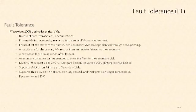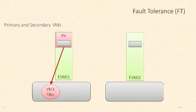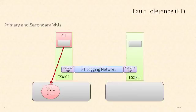Let's take a look at how fault tolerance works. On the left-hand side we have our primary virtual machine — the one we want to protect — and its files are located on a data store. Step one to enabling fault tolerance is to create a fault tolerance logging network using VMkernel ports. This network is used to keep that secondary VM exactly the same as the primary VM.